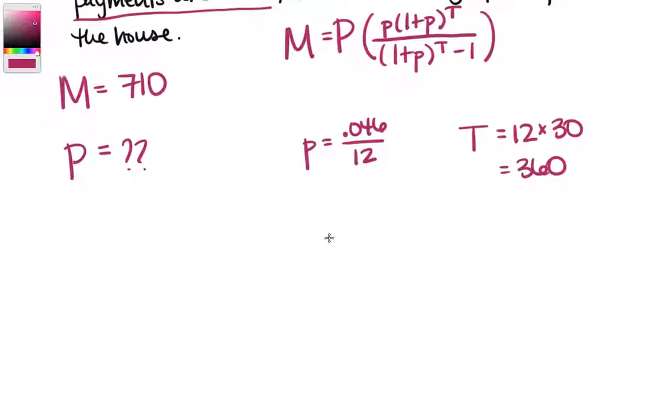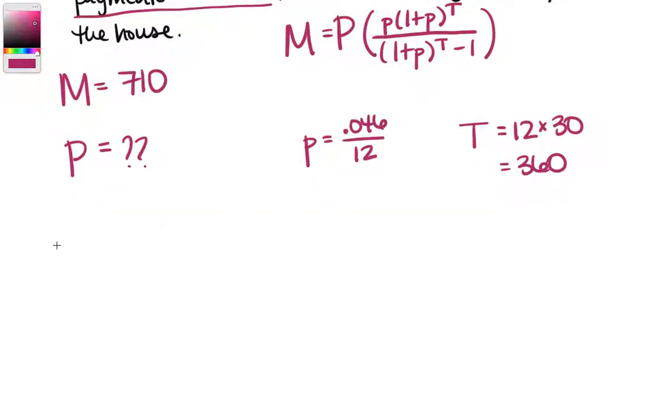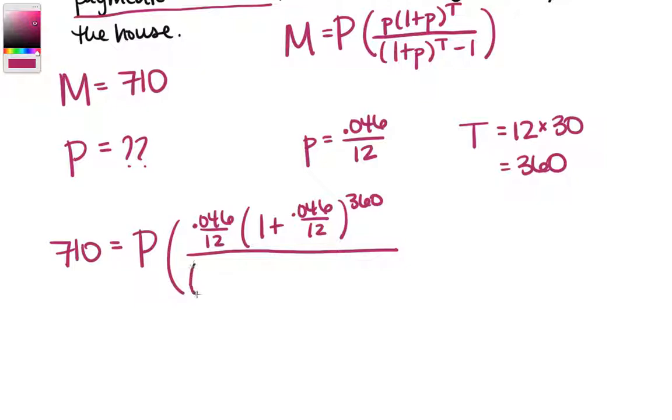Let's go ahead and fill all of this in. So M equals 710 equals the principal, which we still don't know, times little p 0.046 over 12 times 1 plus 0.046 over 12, and we know what t is, we can go ahead and fill that in, 360, over 1 plus 0.046 over 12, our periodic interest rate raised to the t, minus 1.